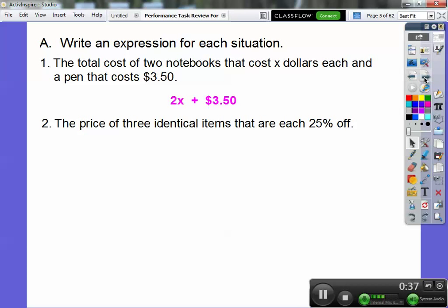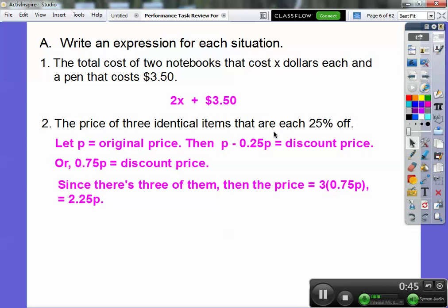The price of three identical items that are each 25% off. I'm going to let P be the original price. If it's 25% off, that is 75% of the original price. The discount price is 0.75P. If we take off 0.25 from P, we're left with 75% of the original price.